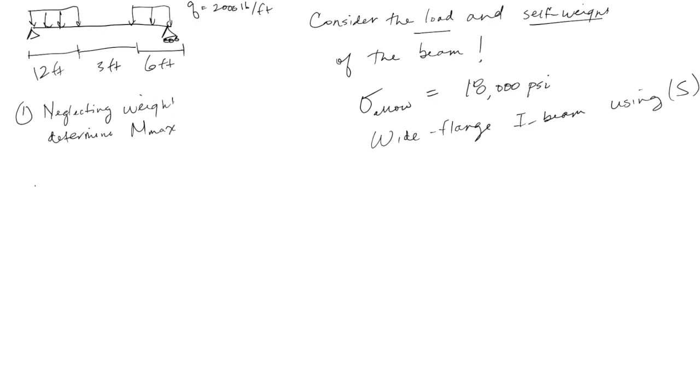Then we're going to determine S given sigma allowable. But now, so we know that this cross section here will work for the beam if we ignore the weight. So what we have to do now is once we've selected the beam, we have to add the weight back in at step one and then go through the process again. So we determine S. Once we've determined S, we go ahead and select the actual beam.